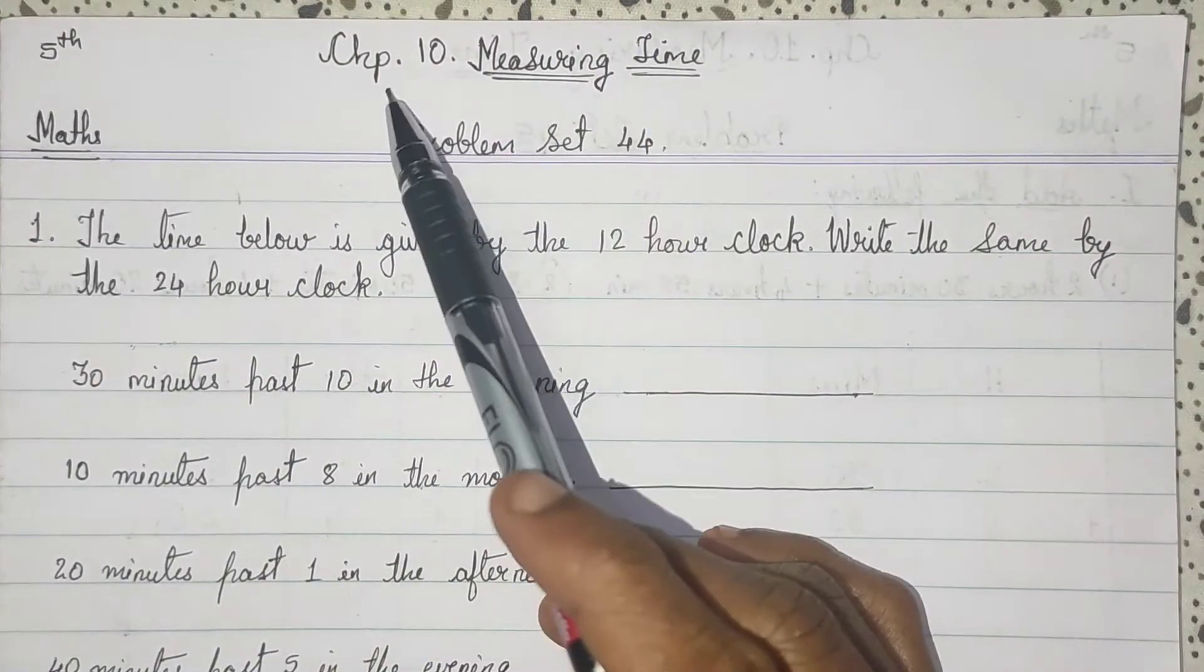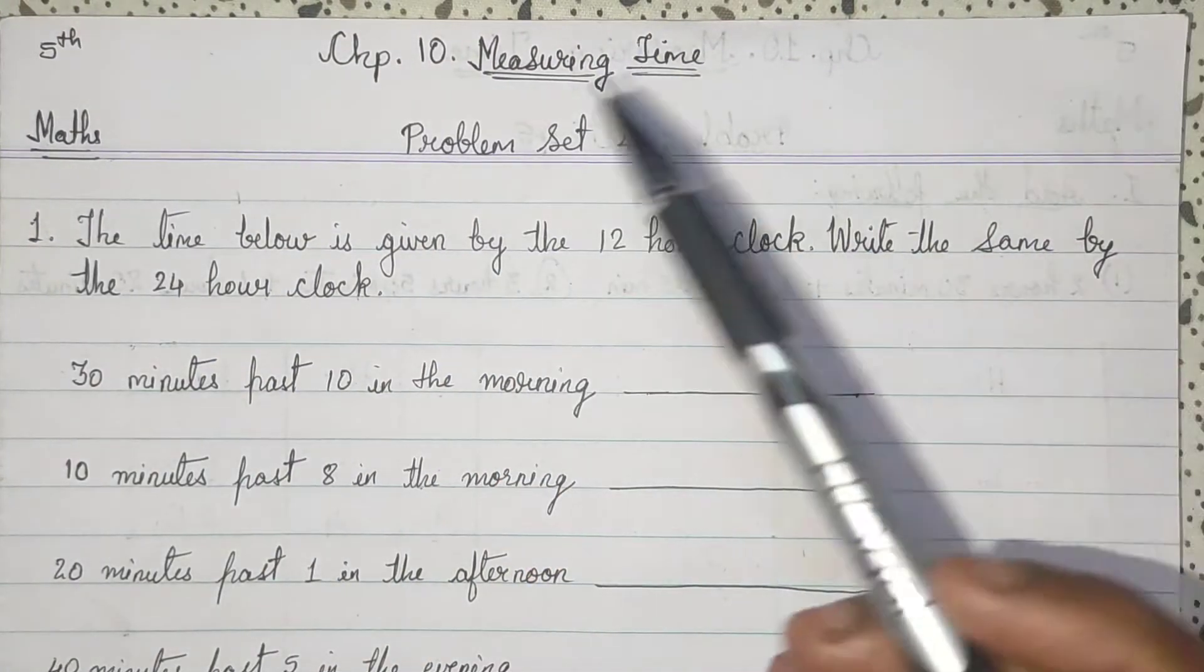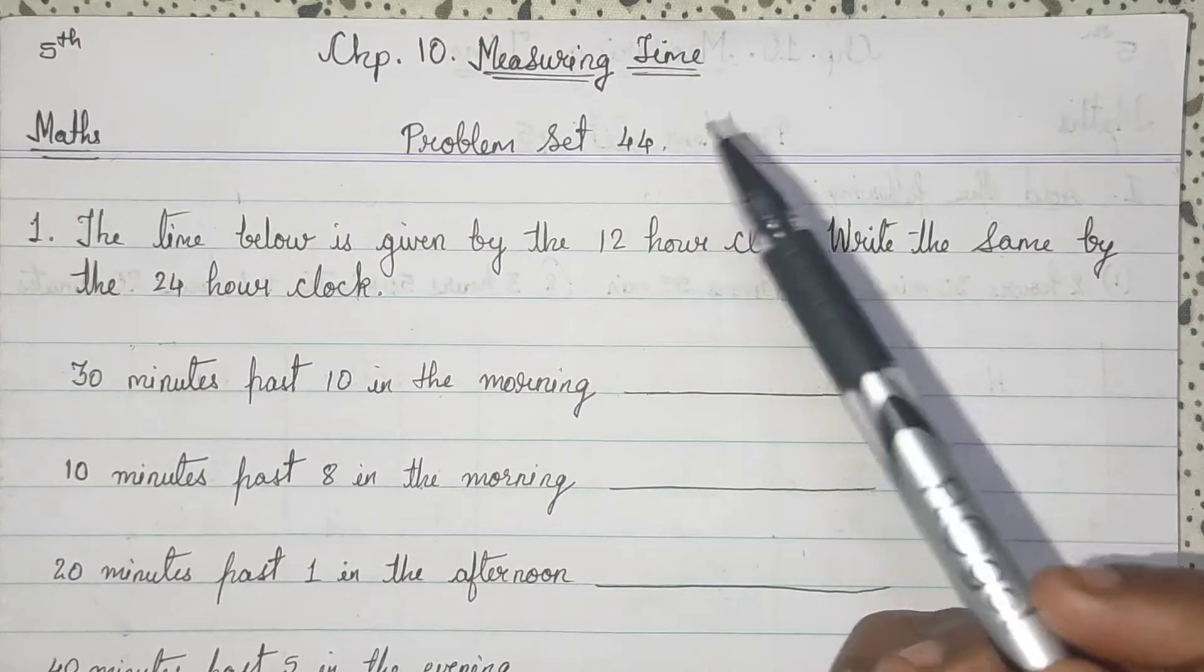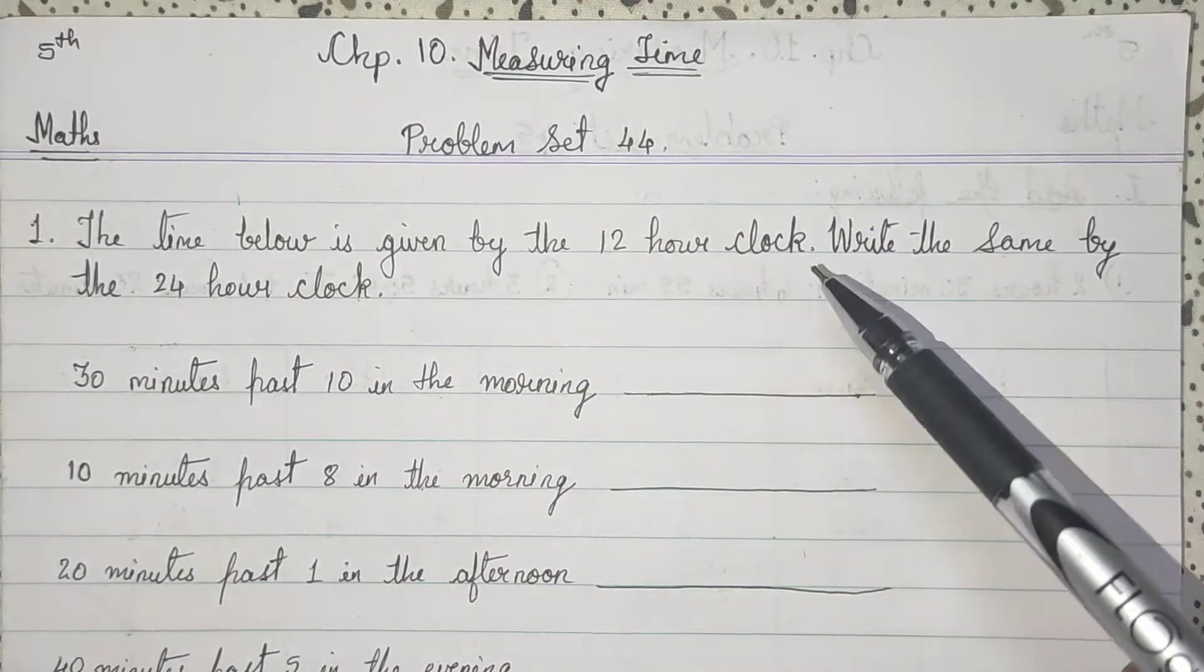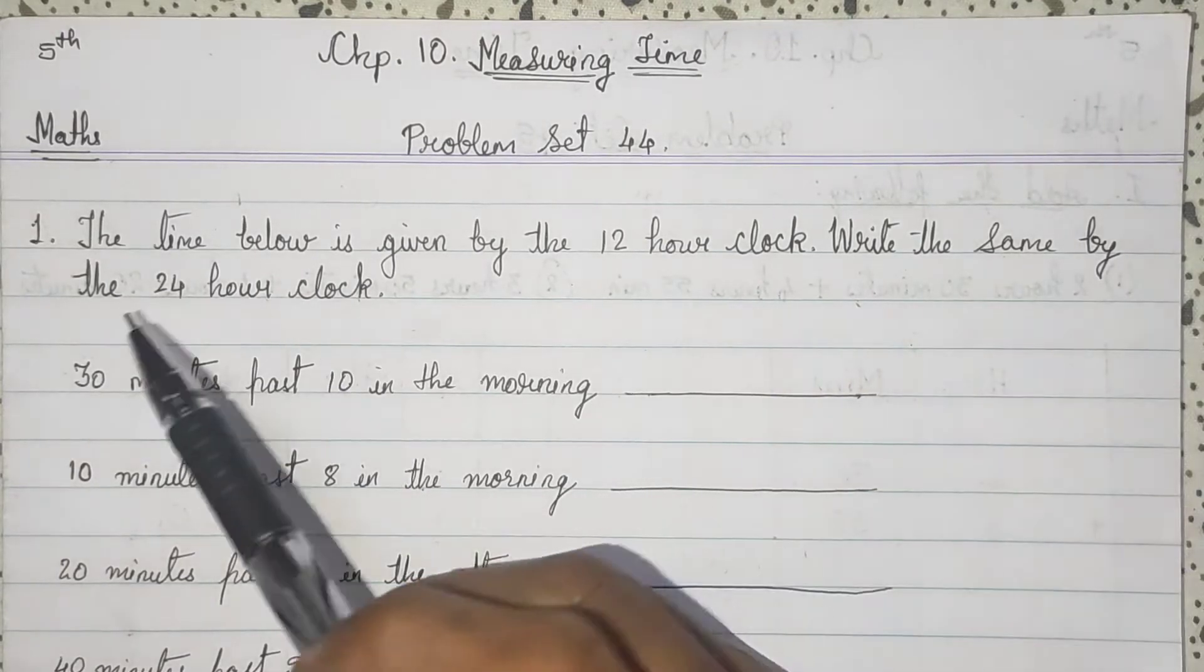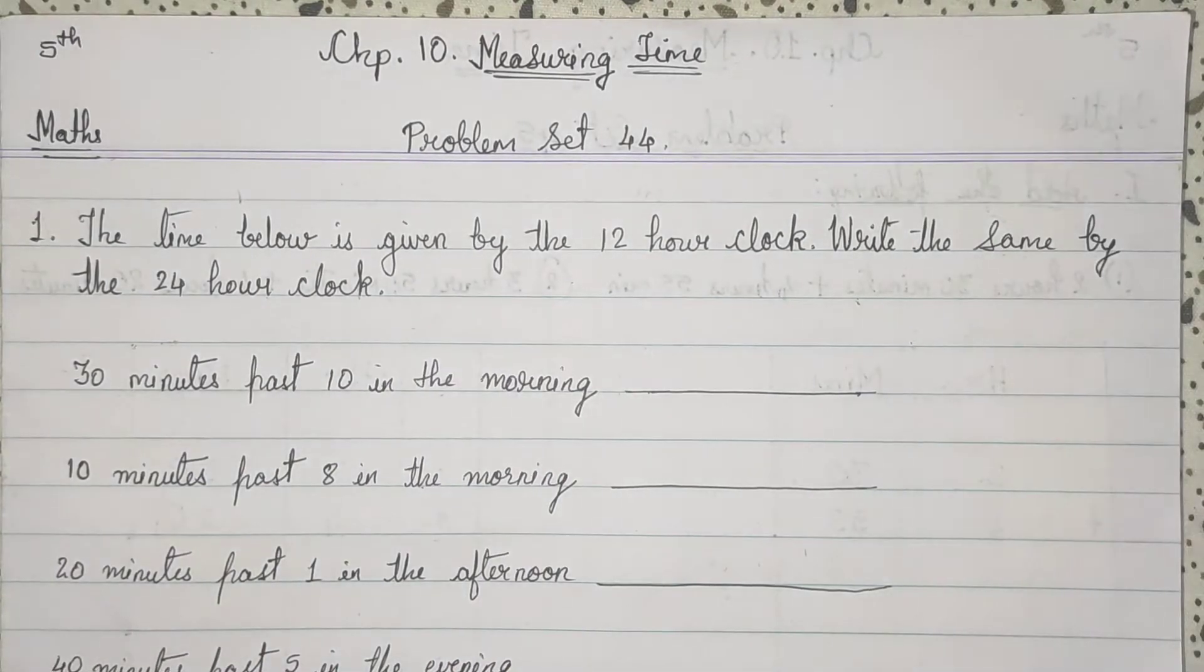Standard 5th Maths Chapter 10 Measuring Time Problem Set 44. The time below is given by the 12 hour clock. Write the same by the 24 hour clock.